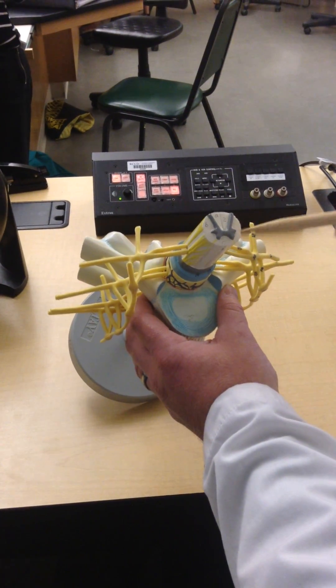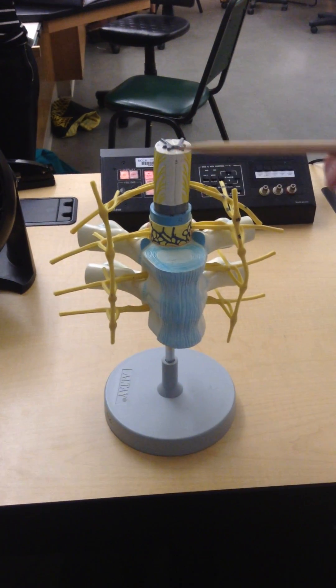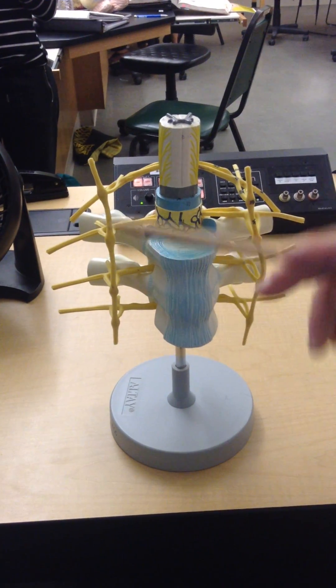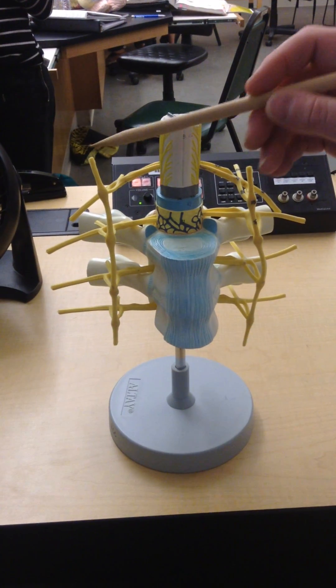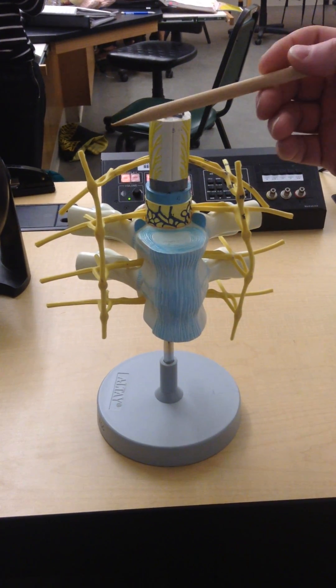As those neurons exit, there's going to be structures here that are associated with it called chain ganglia. This chain ganglia is going to have, as the name implies,